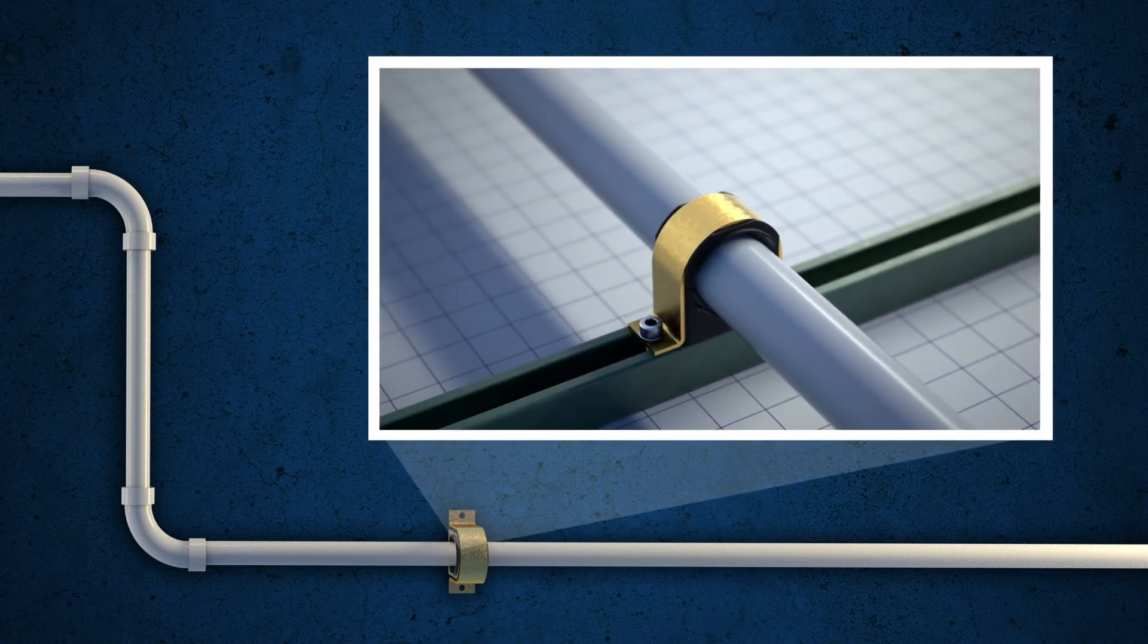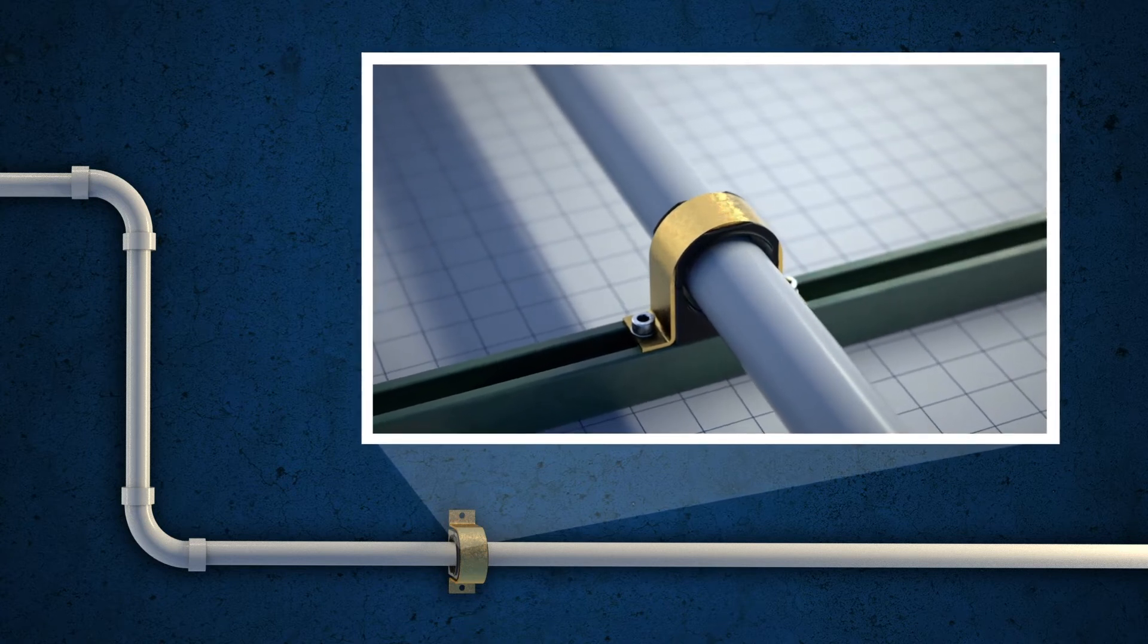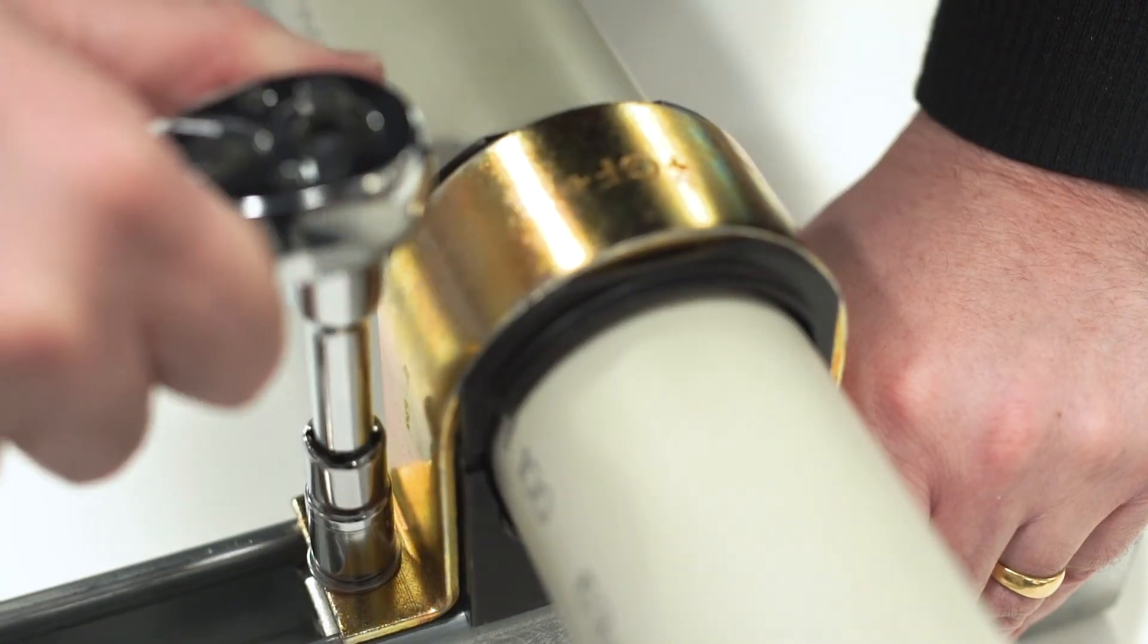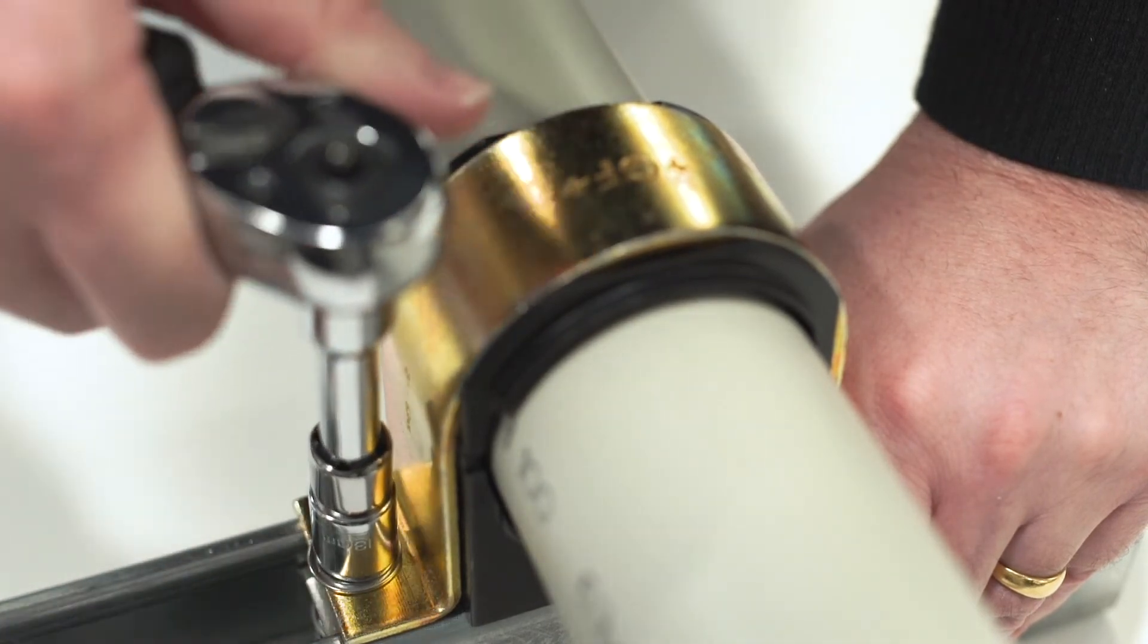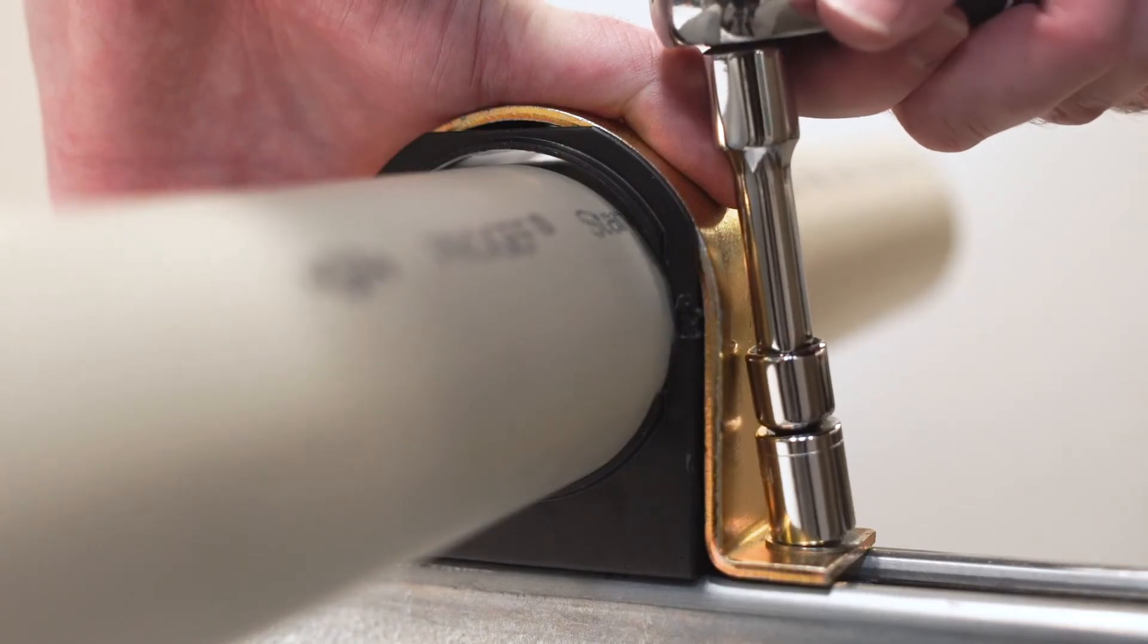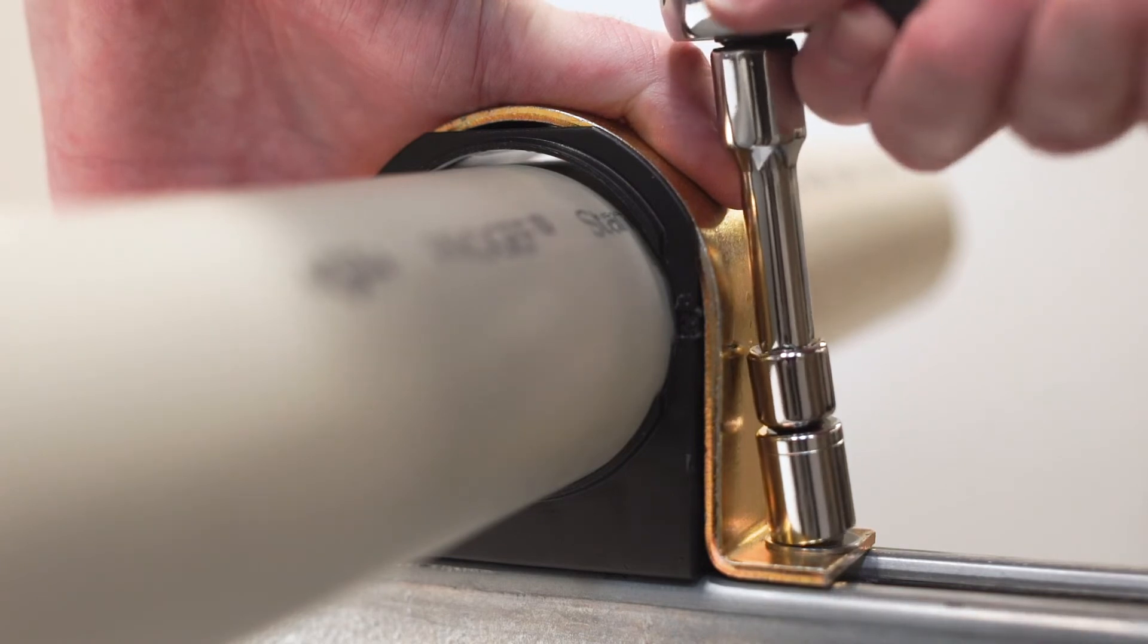By design, the metal bracket cannot touch the pipe. Additionally, no matter how hard the installer bolts down the metal bracket, the stressless guide will not squeeze the pipe.